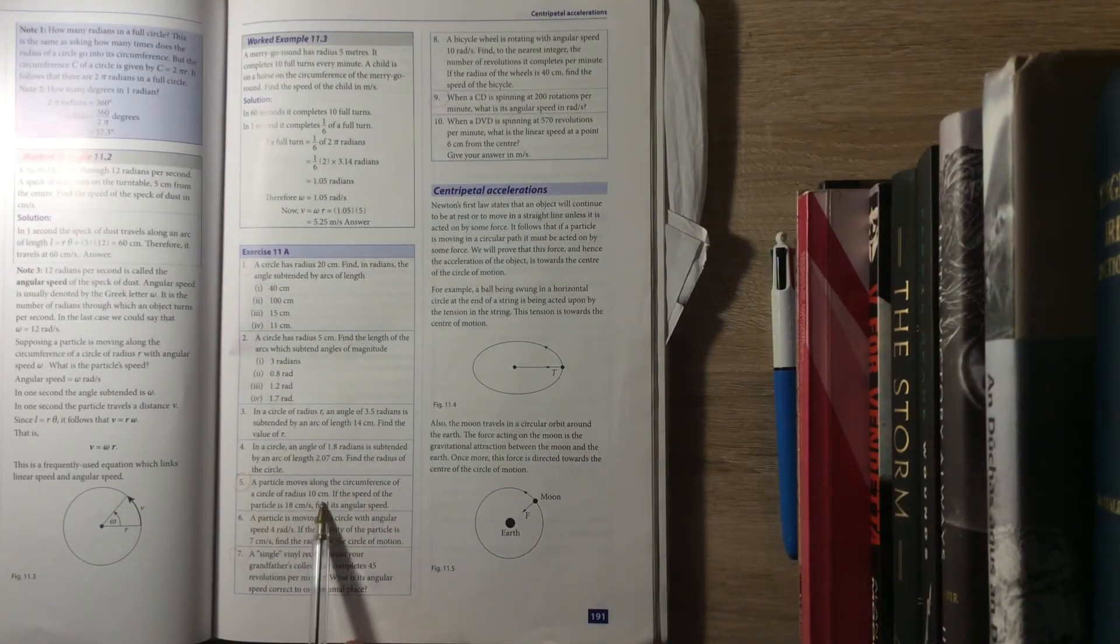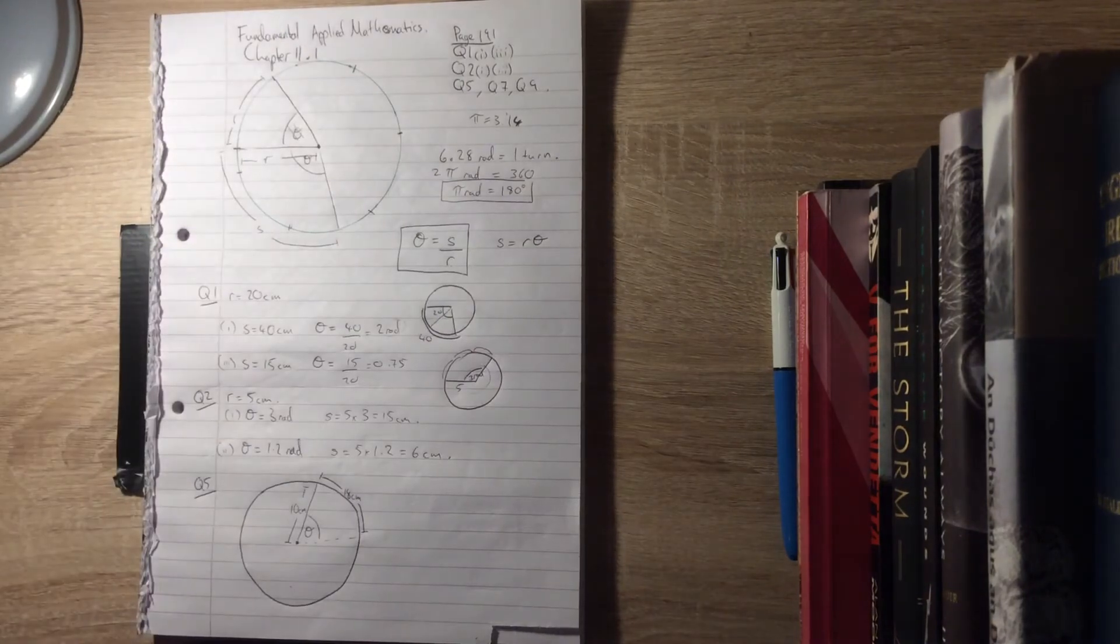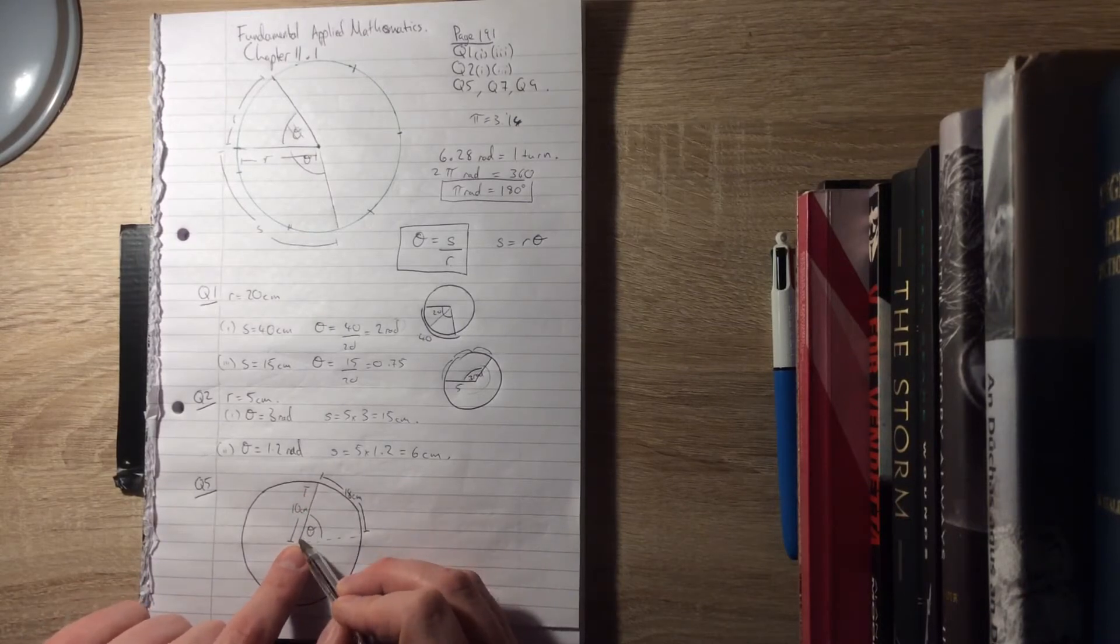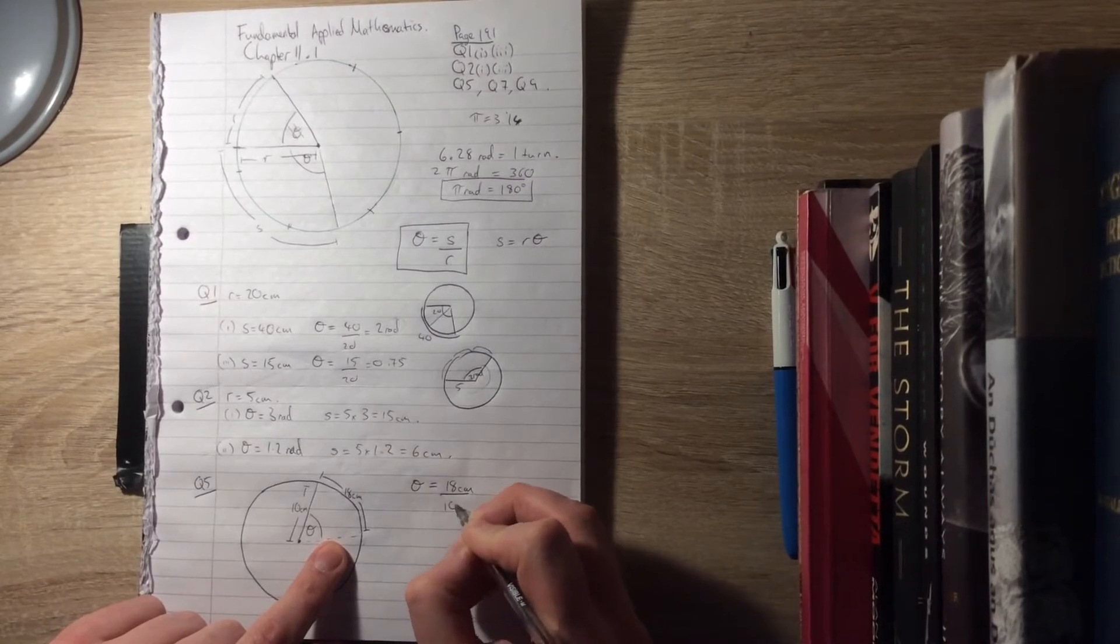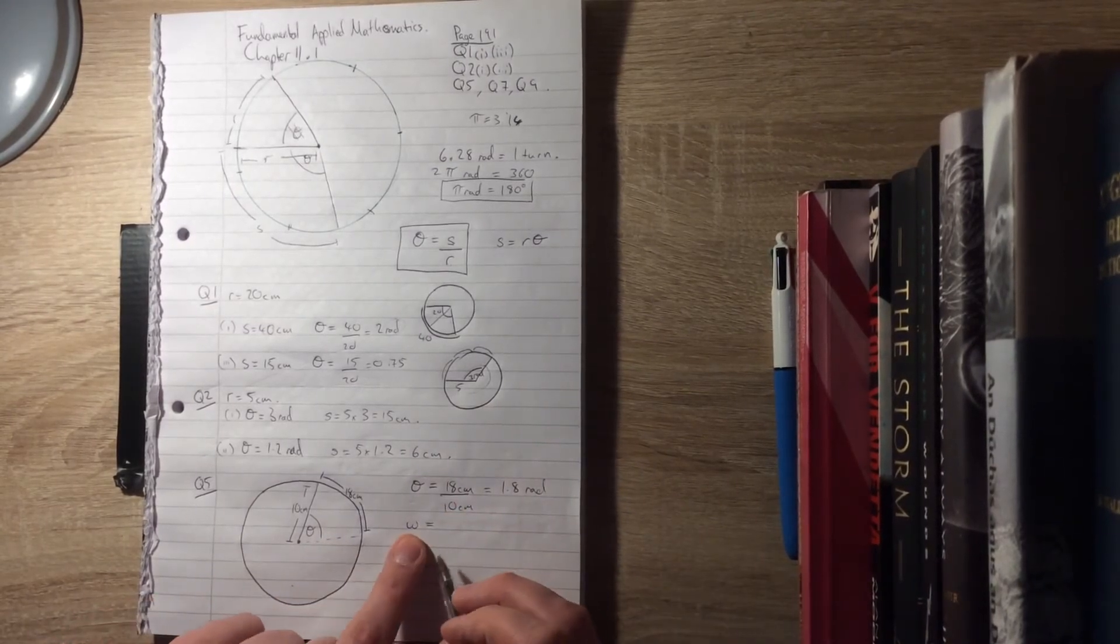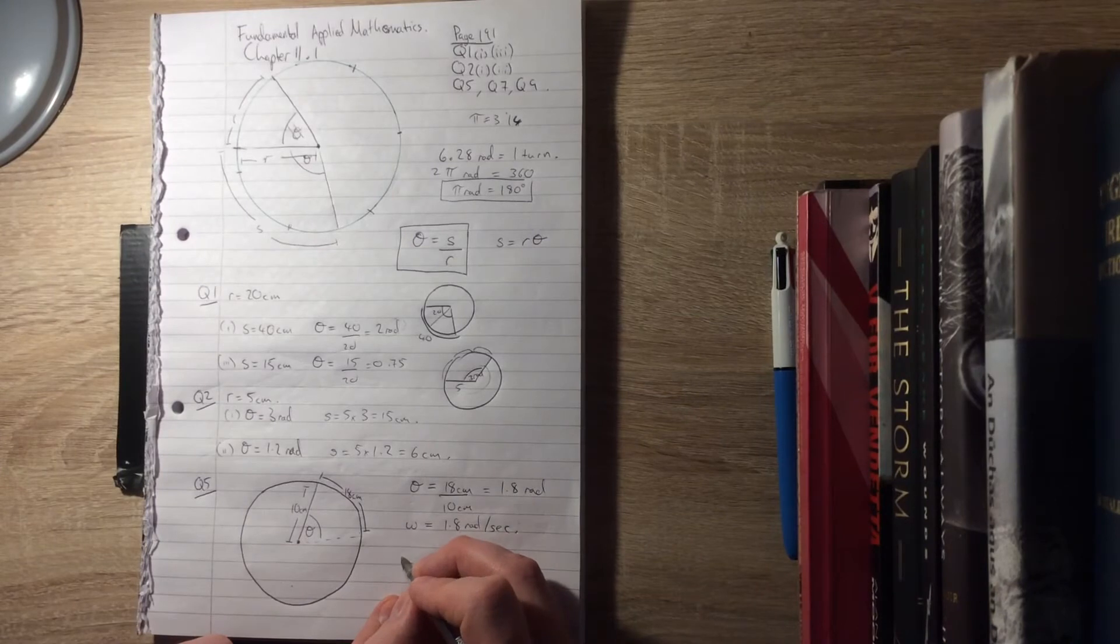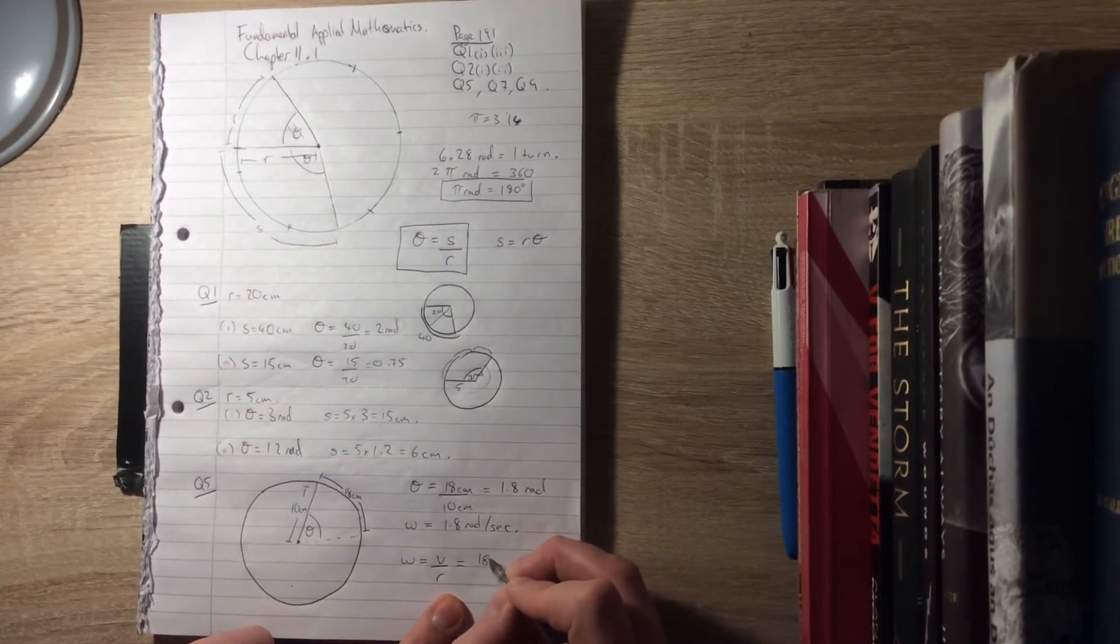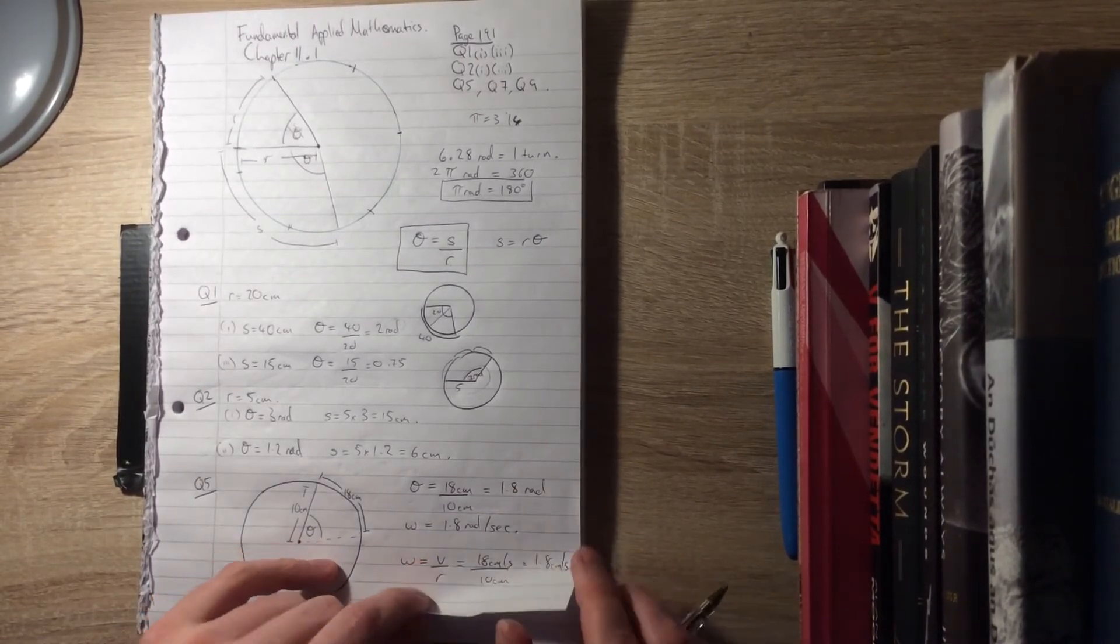Question 5 says a particle moves along the circumference of a circle of radius 10 centimeters. If the speed of the particle is 18 centimeters per second, find its angular speed. The concept of angular speed: if this particle every second covers 18 centimeters and it's a 10 centimeter radius, then the angle it subtends every second is 18 centimeters divided by 10, which is 1.8 radians. Its angular speed, therefore ω (omega), is 1.8 radians per second. A more direct approach: ω = v/r, so 18 centimeters per second over 10 centimeters equals 1.8 radians per second.